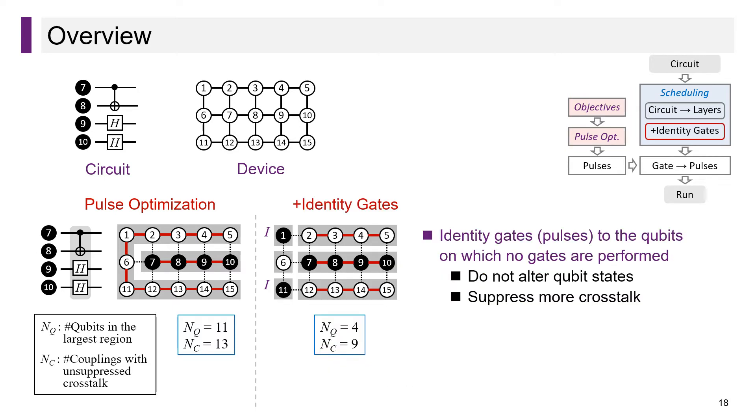We propose two strategies to reduce the metrics. The first one is to insert additional identity gates to the qubits on which no gates are performed. For example, we can apply extra identity gates to qubits 1 and 11. Though identity gates do not alter qubit states, their pulses are also optimized and can suppress more crosstalk. We can see that both N_q and N_c have decreased.